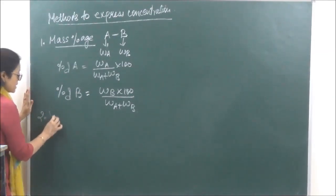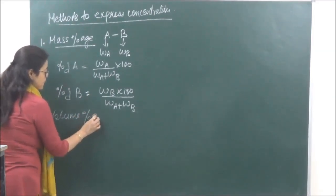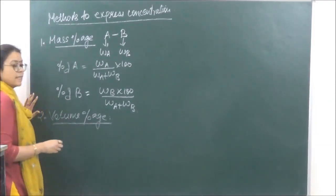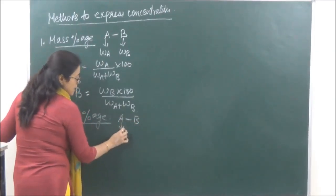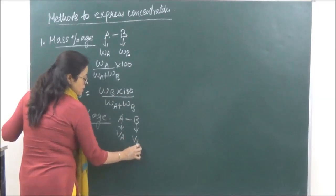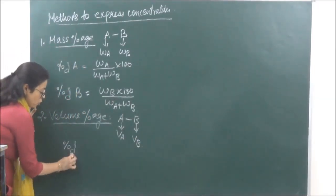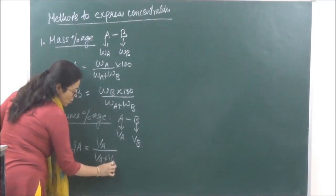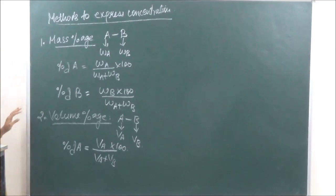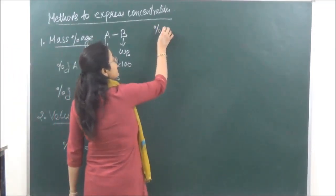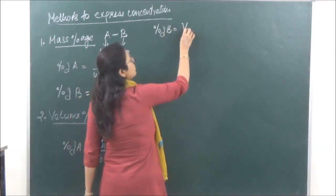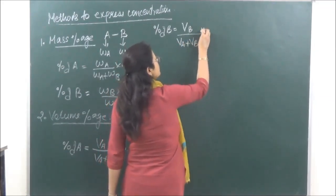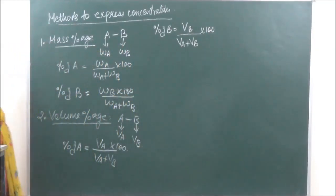Second method is volume percentage. Volume percentage pe hum log volumes consider karenge. Again A and B lete hain - VA and VB. Volume percentage of A = volume of A upon total volume into 100. Usi tarah se volume percentage of B = volume of B upon total volume into 100.